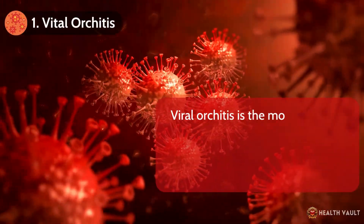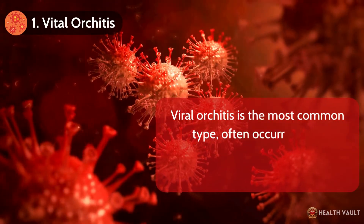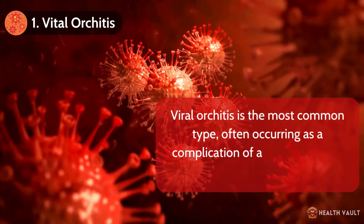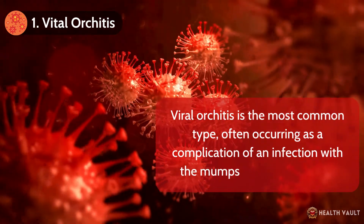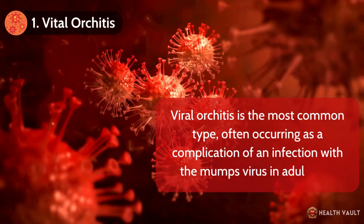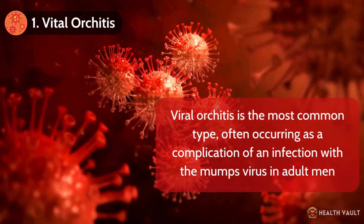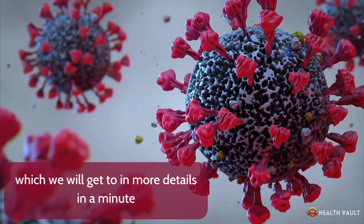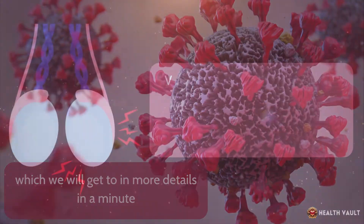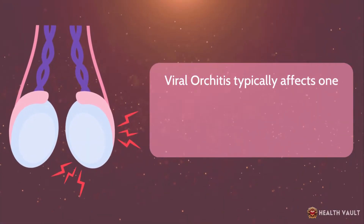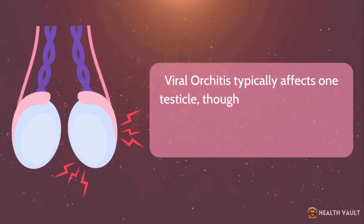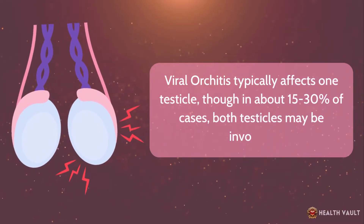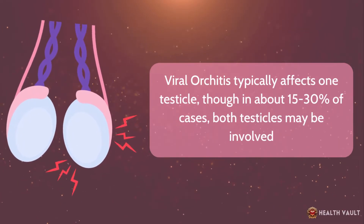Viral orchitis is the most common type, often occurring as a complication of an infection with the mumps virus in adult men. Viral orchitis typically affects one testicle, though in about 15-30% of cases, both testicles may be involved.